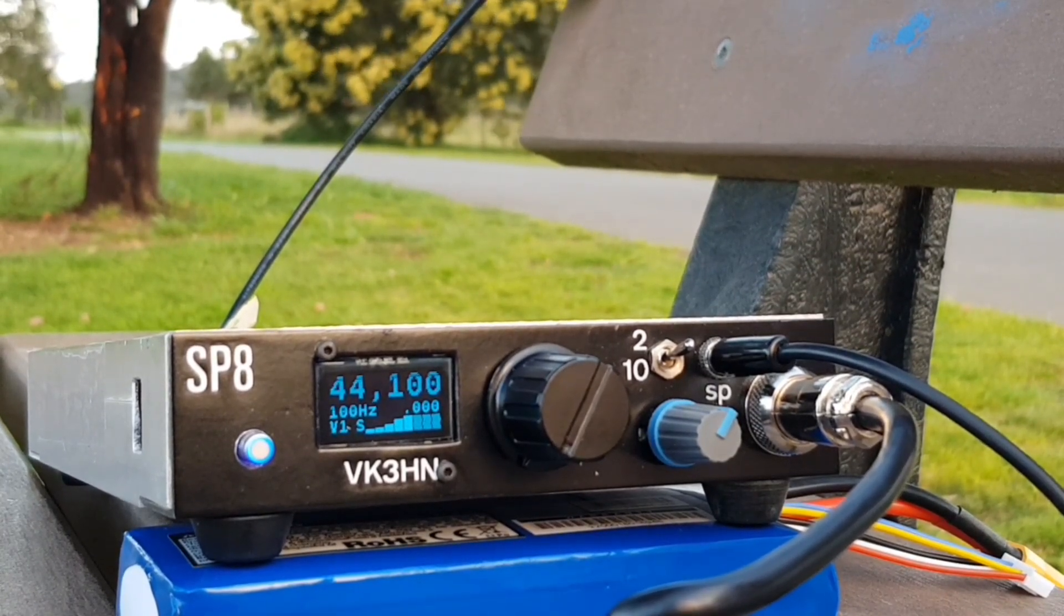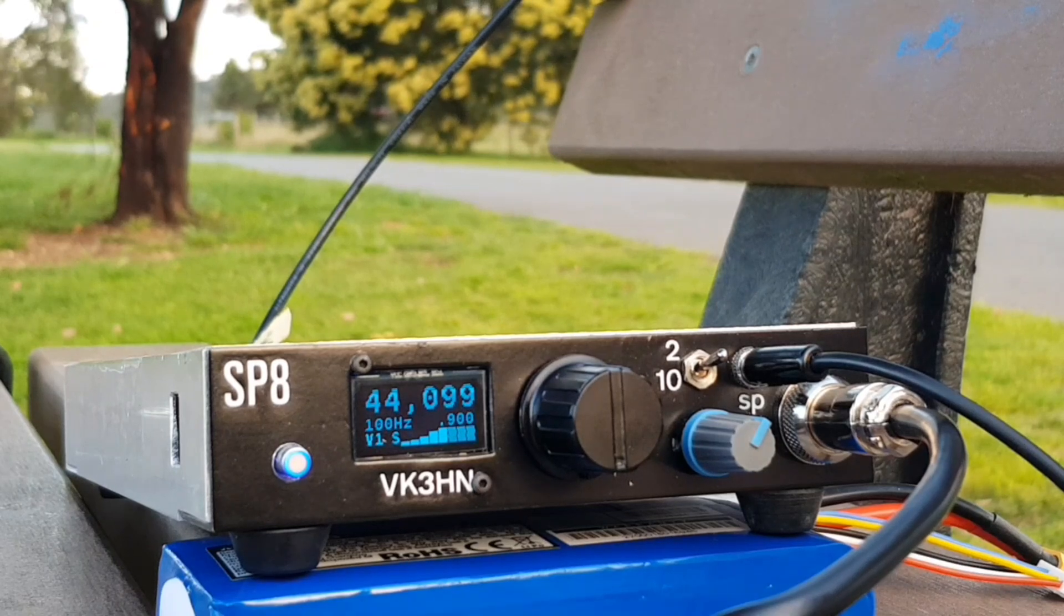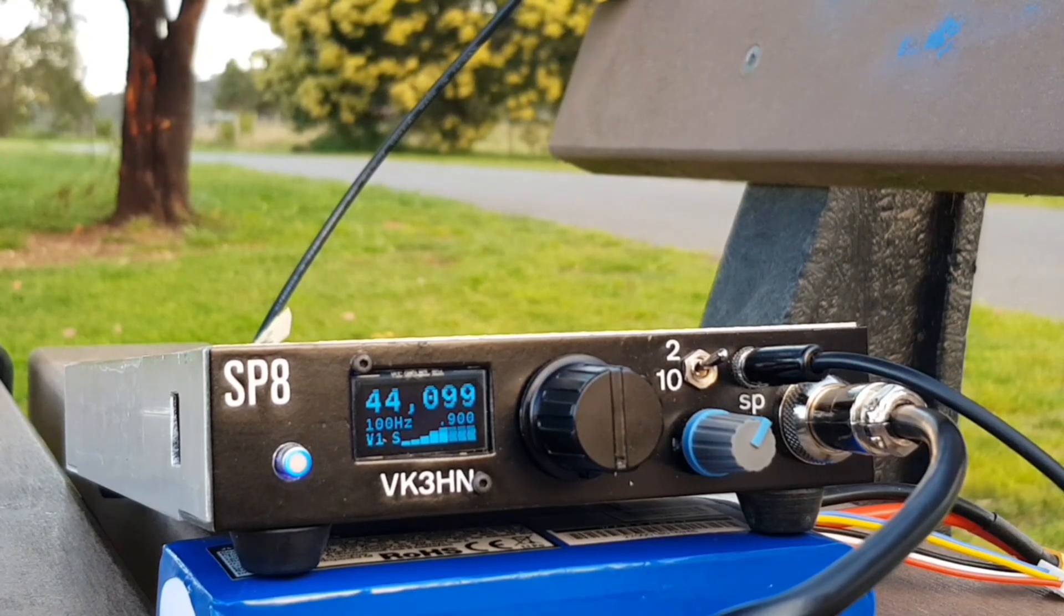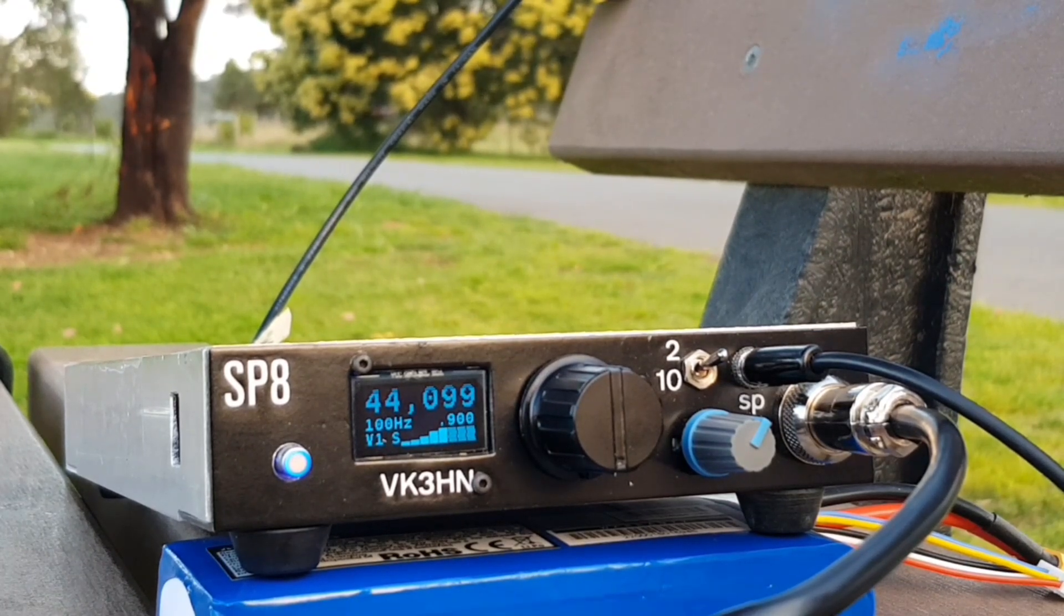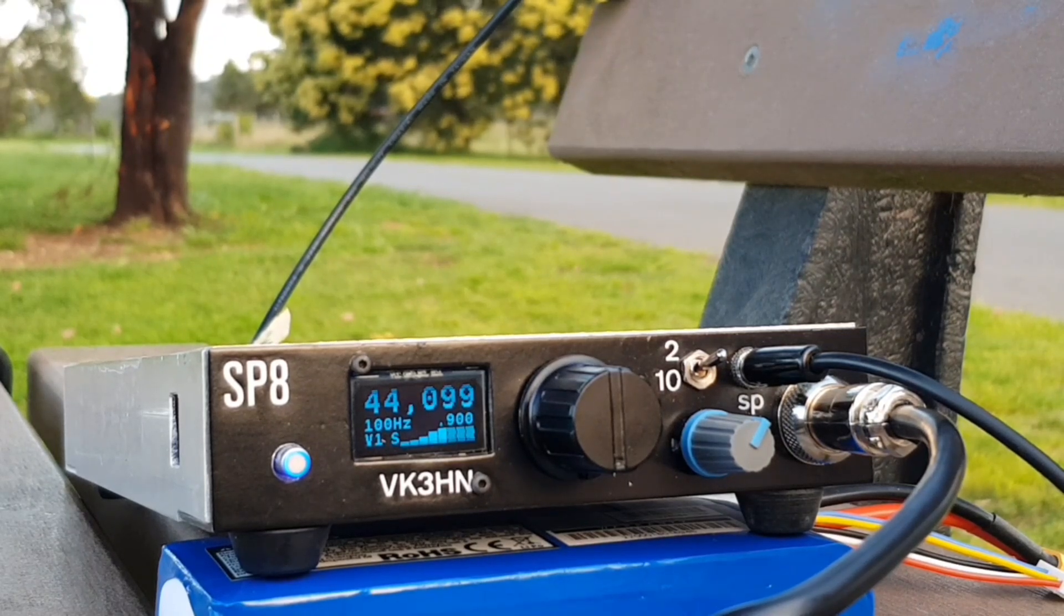But it doesn't matter, it's still a very good signal. Safe biking and at least riding a bike you don't have to wear a blooming mask. Oh dear. VK3HN portable and the group VK3HV.